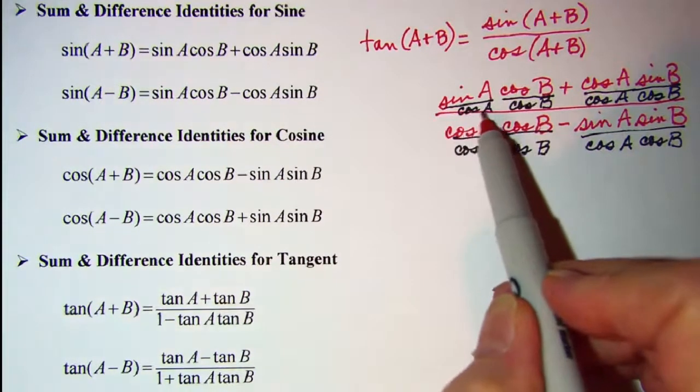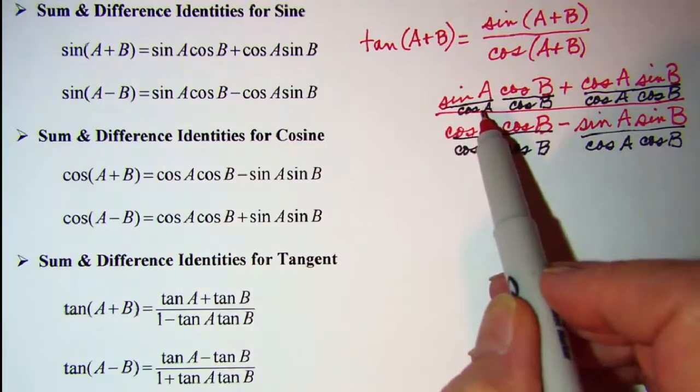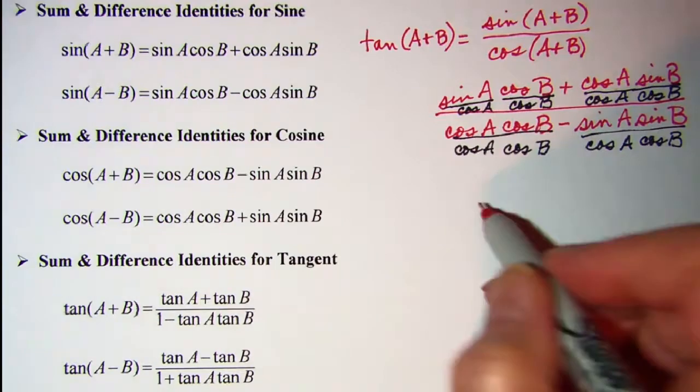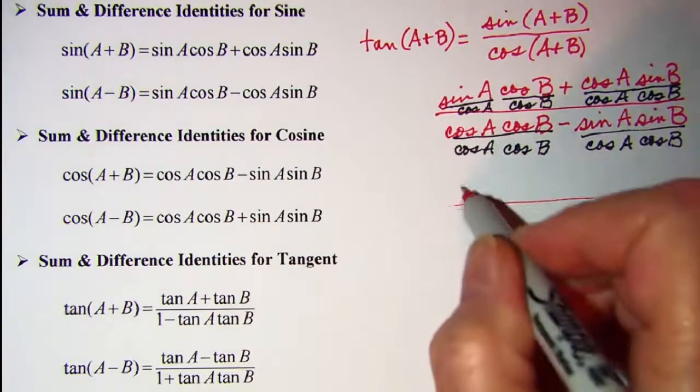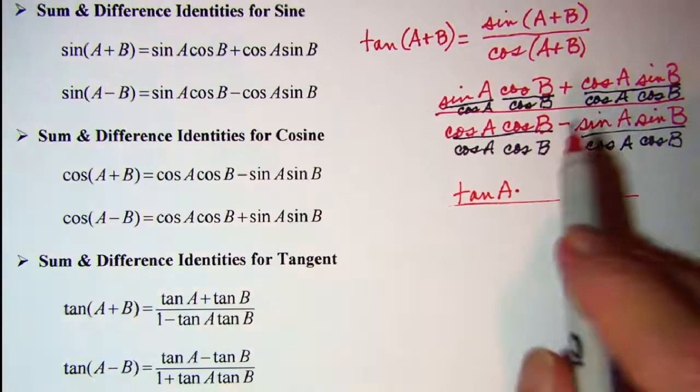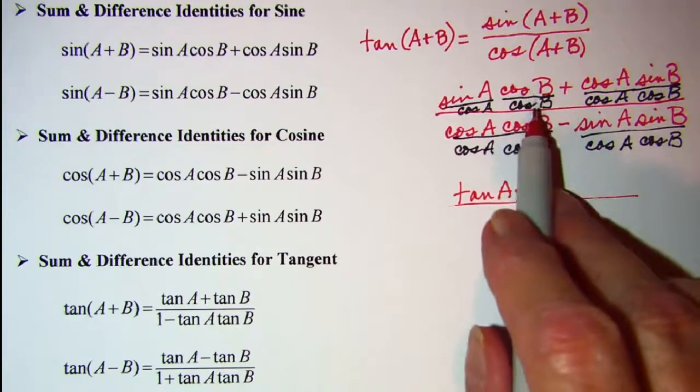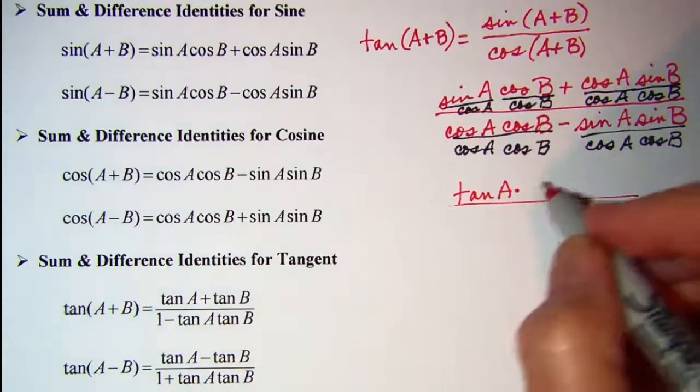So this first fraction, sine A over cosine A, that's the same as tangent A. Times, and then the second fraction right here, cosine B over cosine B, that's just one.